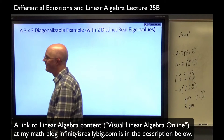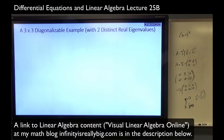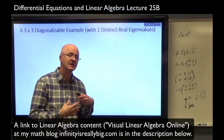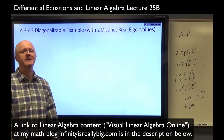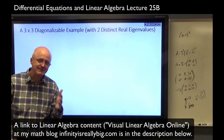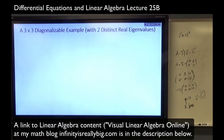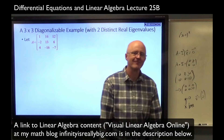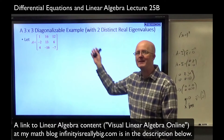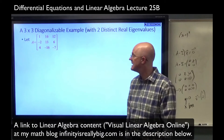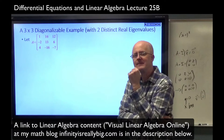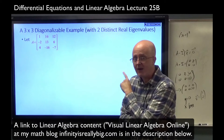Here's our main example for this lecture: a 3×3 diagonalizable example, though it's only going to have two real distinct eigenvalues. Evidently one of which, if it's going to be diagonalizable, must have not only algebraic multiplicity 2 but geometric multiplicity 2 — the dimension of the eigenspace must be 2 in order for it to be diagonalizable. It's good to think about what to expect. In general, if you pick a random 3×3 matrix, the eigenvalues are probably going to be irrational numbers or maybe complex numbers.